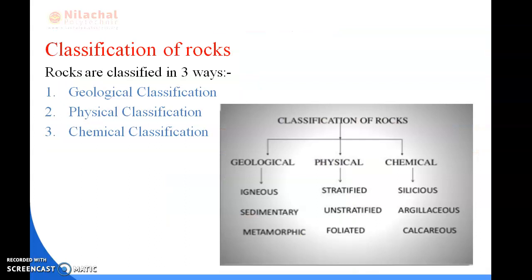These are historical buildings made up of stone. The classifications of rock are three types: geological, physical, and chemical. Geological classification is based on the formation of rock. Physical classification is based on the appearance of rock. Chemical classification is based on the chemicals rocks contain. Geological classification is categorized into three types: igneous, sedimentary, and metamorphic. Physical classification into three types: stratified, unstratified, and foliated. Chemical classification into three types: siliceous, argillaceous, and calcareous rocks.